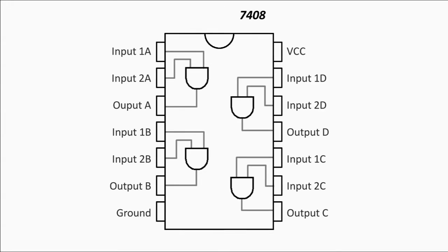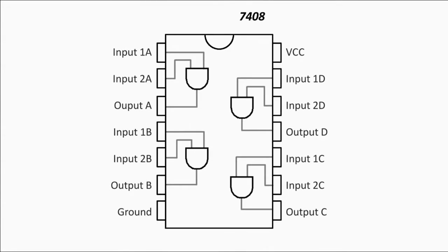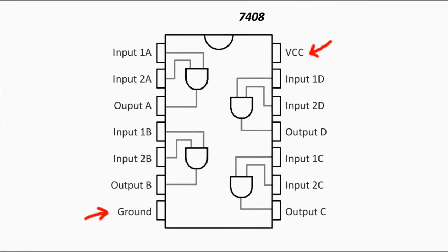The 7408 is the quad AND gate — essentially you have four different AND gates laid out in this pattern. Right away you'll notice two connectors you may not have seen before: one labeled Ground and one labeled VCC. Logic gates do actually require power. Just think about a NOT gate — if you give it zero, in other words no power, how is it able to somehow produce a one or high as an output? It's got to get some kind of electrical input from somewhere.